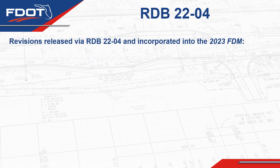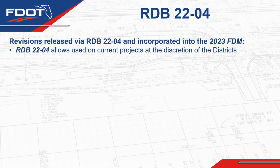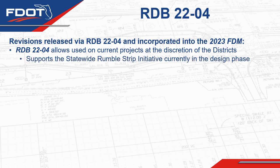These revisions were released through Roadway Design Bulletin 22.04, which is available on our website now. These revisions have also been incorporated into the 2023 FDM and the 2023-2024 Standard Plans. The reason for the bulletin was so that the districts could use it at their discretion on current projects, and it was needed to support the statewide rumble strip initiative that is currently in the design phase.